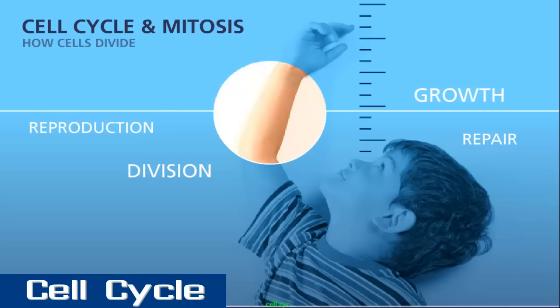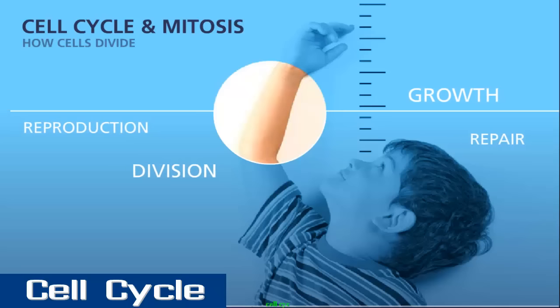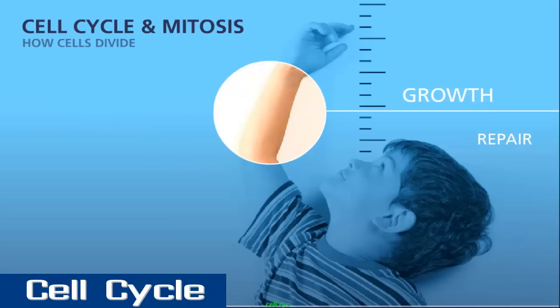In eukaryotic cells, this process is accomplished by a series of well-orchestrated steps called mitosis.